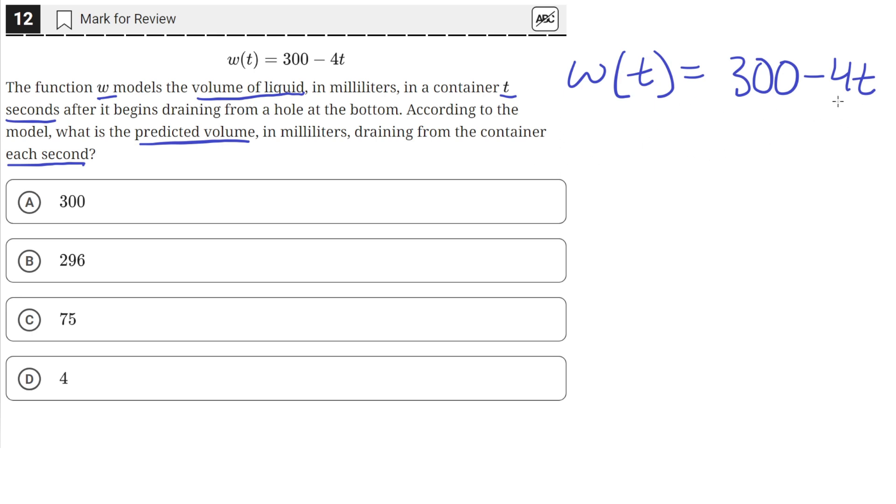We can see from this equation that for every second that passes, or when t increases by 1, the volume goes down by 4, because negative 4 is the slope of this line, which means the volume decreases by 4 every time t increases by 1.